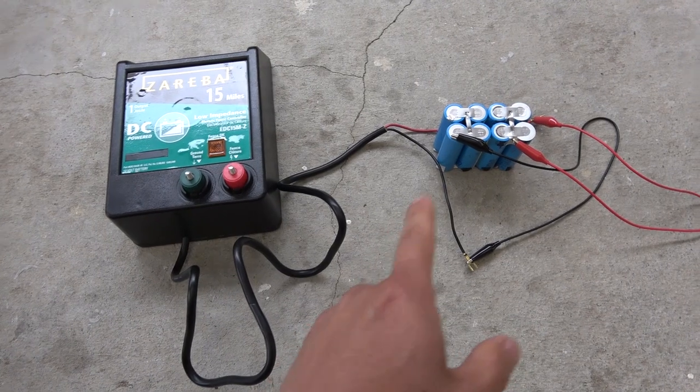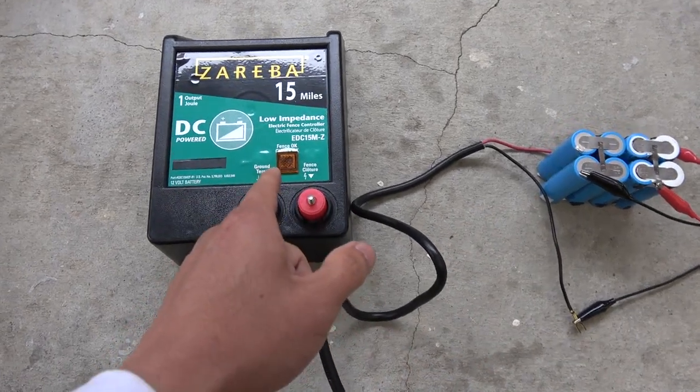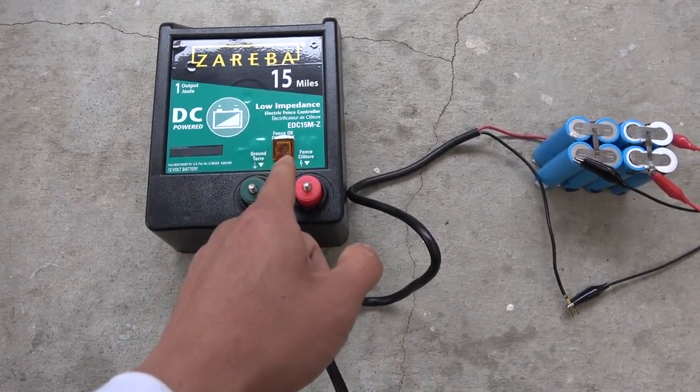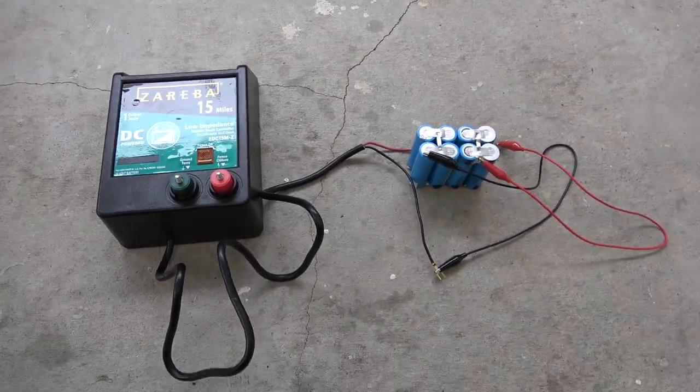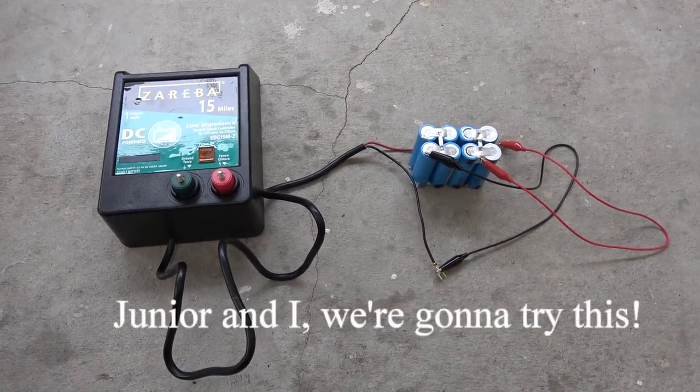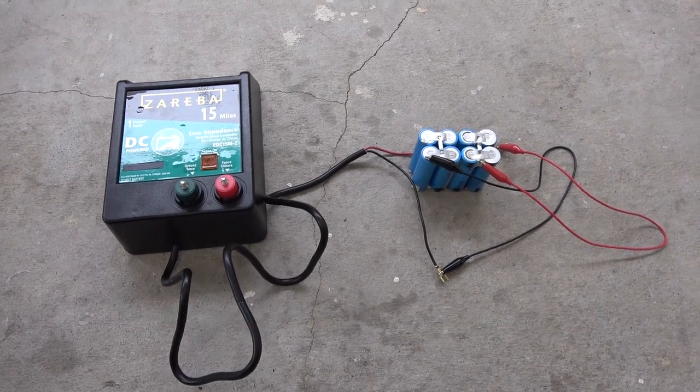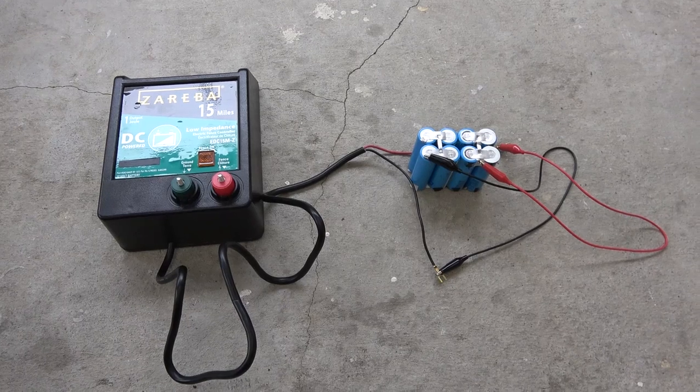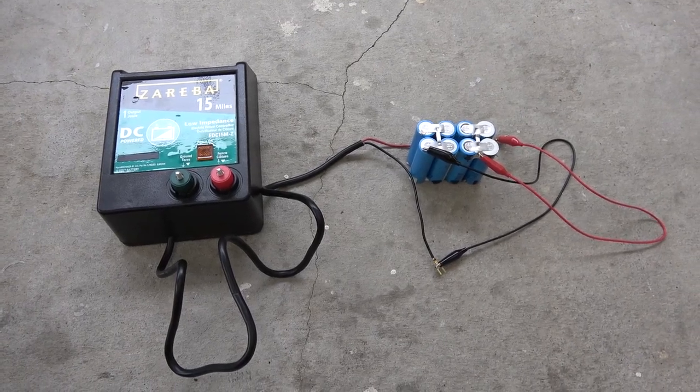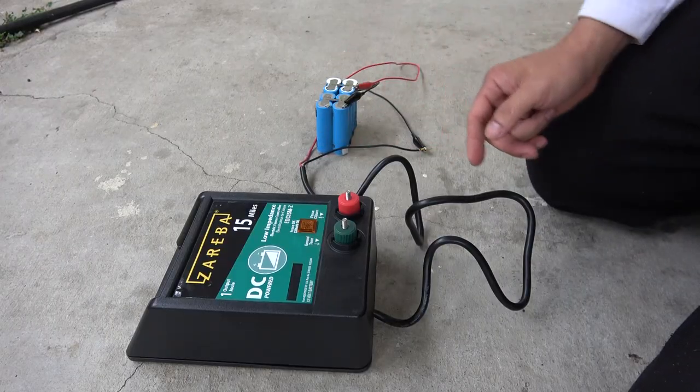Alright, I've got it connected and you can see it's blinking there, so it's working right now. Junior and I, we are going to try this, right? I'm going to go first. This is 20,000 volts, 1 joule output, right?